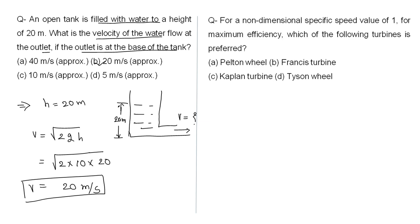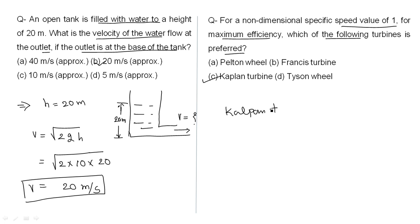For the non-dimensional specific speed value of 1, for maximum efficiency, which turbine is preferred? This is a fact-based question. For that condition we use the Kaplan turbine.